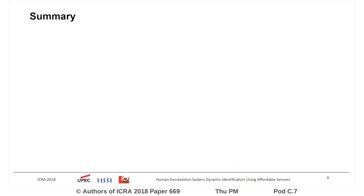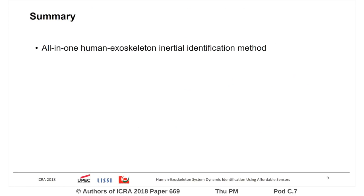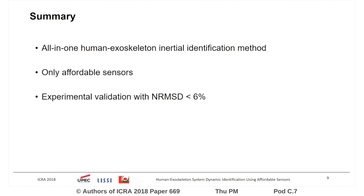In summary, it is an all-in-one human exoskeleton inertial identification method using only affordable sensors, and it has been experimentally validated with an error lower than 6%. For any additional details, please check the poster. Thank you.